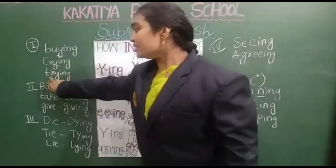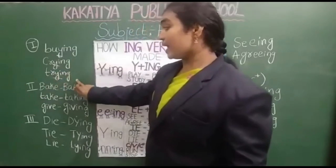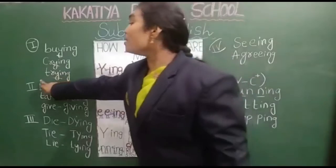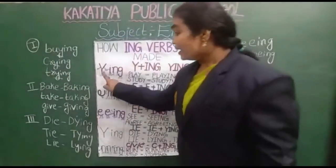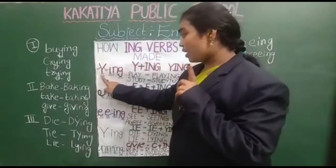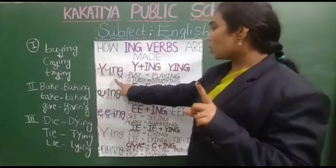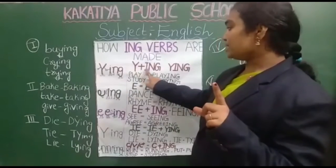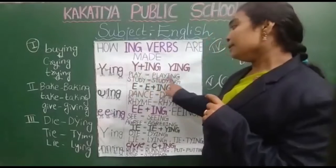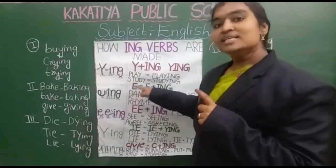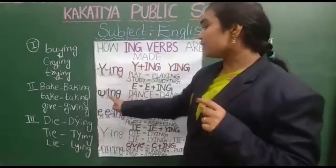Look here: T-R-Y plus I-N-G — trying. Okay children, what is rule number 1? When the word ends with Y, so I-N-G becomes friends. It becomes Y plus I-N-G — Y-I-N-G. Play — playing. Study — studying. Okay children, have you understood? Let us come to another one.